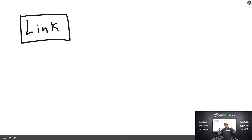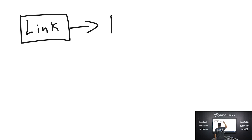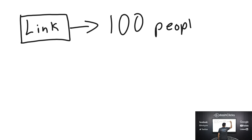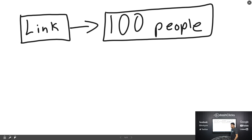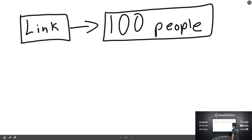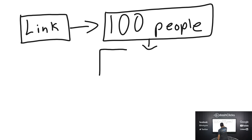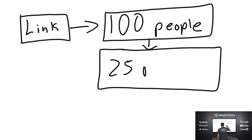When you log into your dashboard, there's going to be an affiliate dashboard with a unique link we give to every DashClicks user. You give that link to 100 people. Most of you have email lists of 5,000 people, Facebook friends who own agencies, networks of like-minded people, or you're running ads. Let's say out of those 100 people, 25 actually create a free DashClicks account.